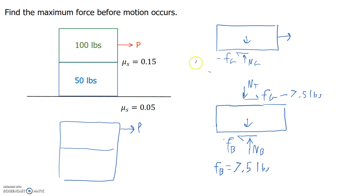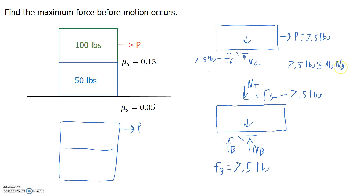So if we do the sum of the forces in x for the top box, the pulling force equals 7.5 pounds. We can verify that 7.5 pounds is less than or equal to mu static times the normal force for the green box, which is 15 pounds. Since 7.5 is less than 15, our assumption is correct — the boxes are going to stick together and slide off together in tandem.